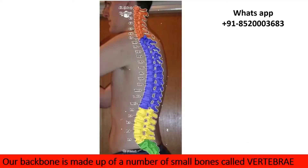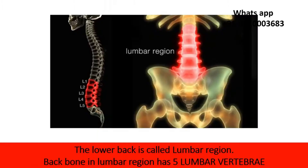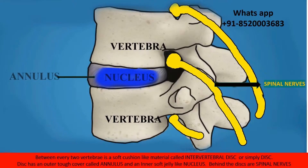Our backbone is made up of a number of small bones called vertebrae. The lower back region is called the lumbar region. The backbone in the lumbar region has five lumbar vertebrae. Between every two vertebrae is a soft cushion-like material called an intervertebral disc, or simply disc.